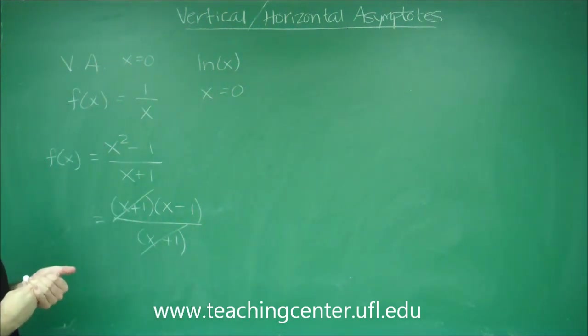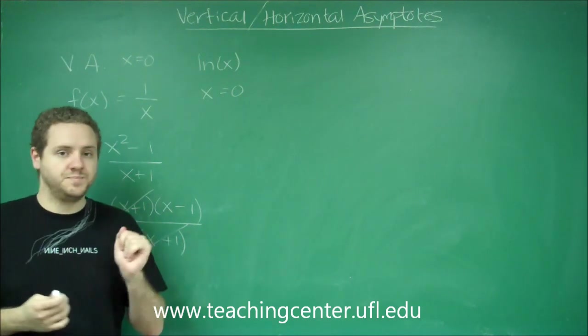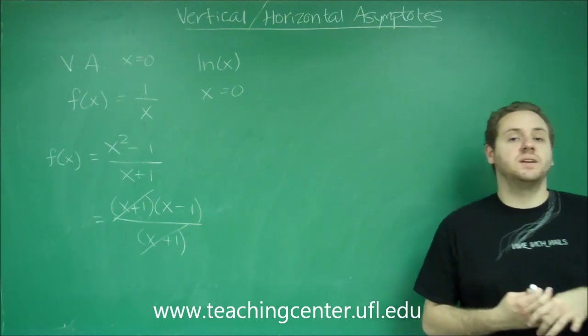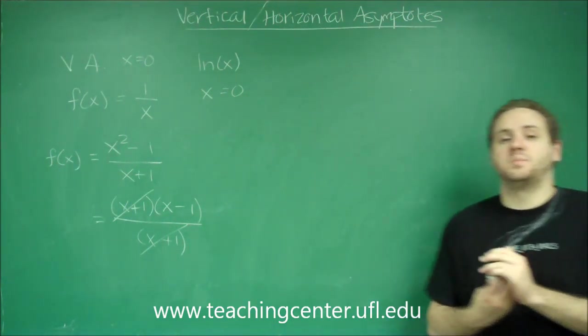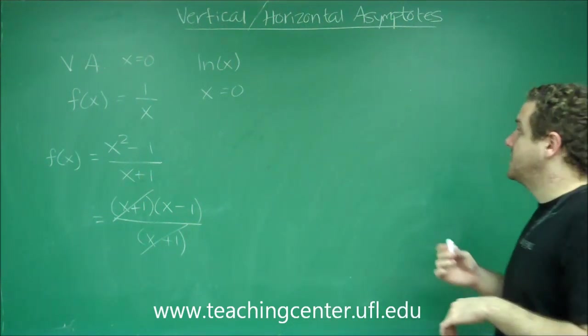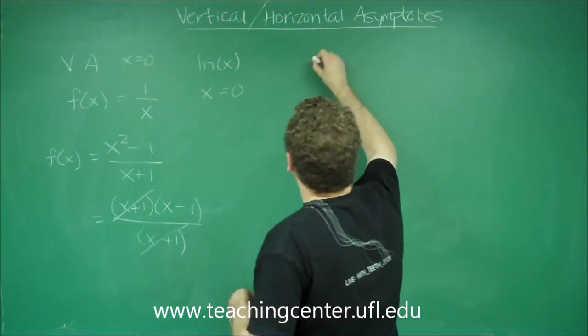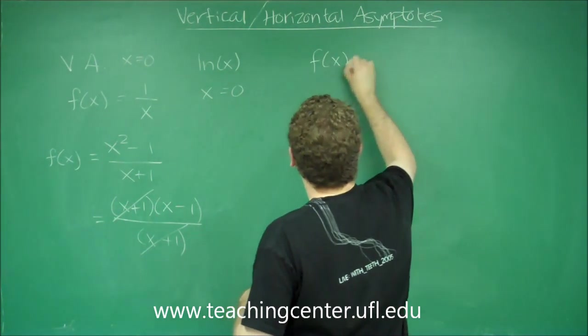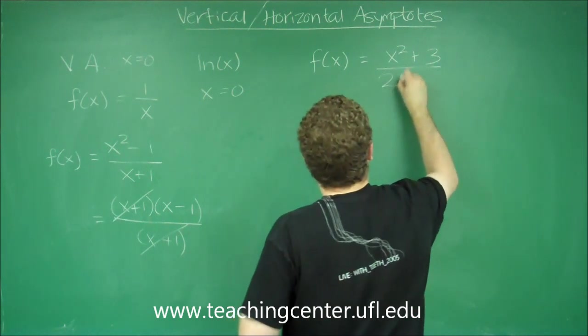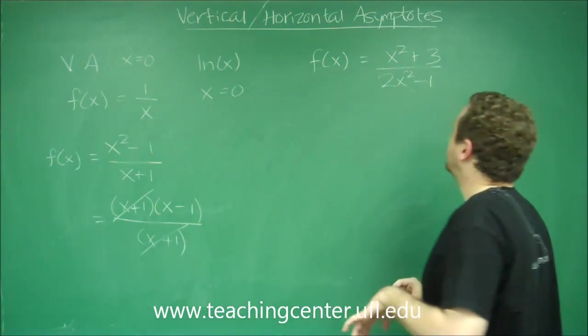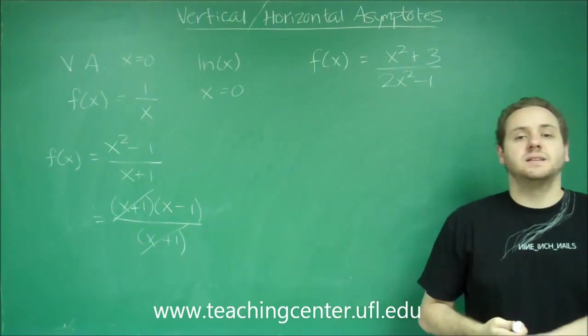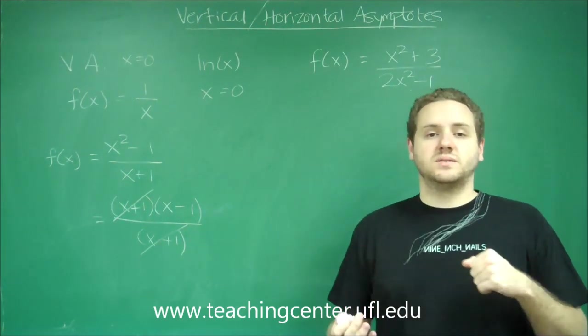So let's talk about horizontal asymptotes. So these are vertical asymptotes here. Horizontal asymptotes you get by taking the infinite limit, the limit as x goes to positive infinity and x goes to negative infinity of a function. So for example, if you have the function x squared plus zero over two x squared minus one, to find the horizontal asymptote you would need to take the limit as x goes to infinity and x goes to negative infinity.